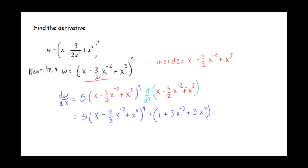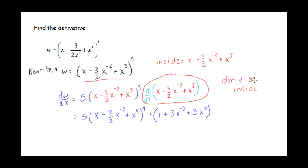Here is the worked-out solution. The inside function is the stuff inside those parentheses. We'll call our derivative dw/dx. Starting with the power rule: we have 5 times that inside function raised to the 4th power, multiplied by the derivative of the inside. The derivative of x is 1; the derivative of negative 3/2 · x to the negative 2 — the 2's cancel and we get a positive, so that's plus 3x to the negative 3; and the derivative of x cubed is 3x squared.